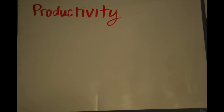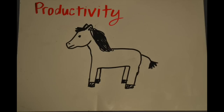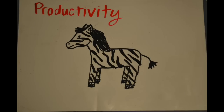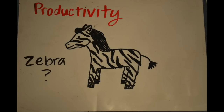We also have productivity. This is the idea that we can make an infinite amount of new words out of morphemes and that we can use these words to describe new things. For example, a new morpheme could be "zebra", which can be described as a horse with black and white stripes.